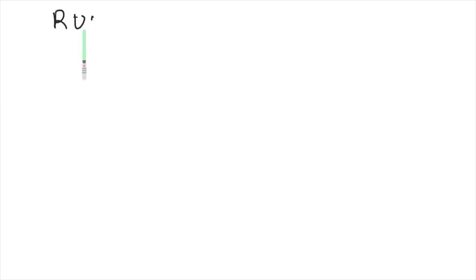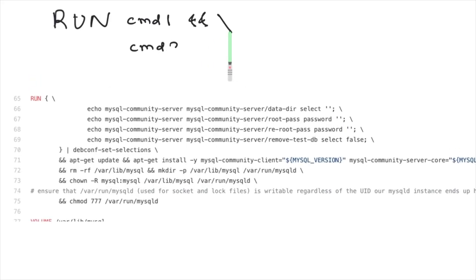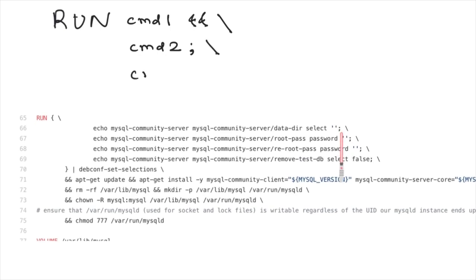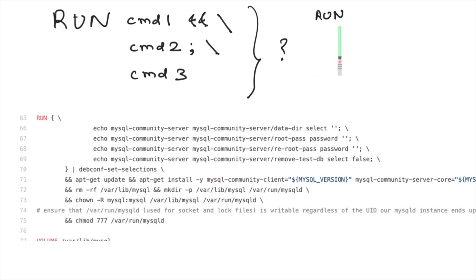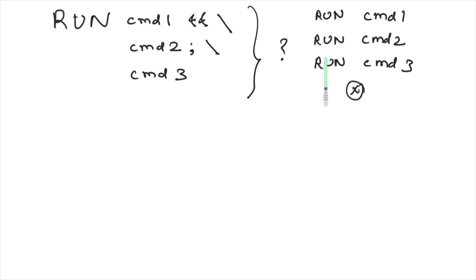In Dockerfiles you'll typically see multiple commands combined into one RUN instruction using '&&' and a newline character, or a semicolon and newline. The newline character can differ between Linux and Windows. The question is: why combine multiple commands into one RUN instruction? The alternative is to use one RUN instruction per command. The second approach is not recommended — the first approach is. Let's look at why.